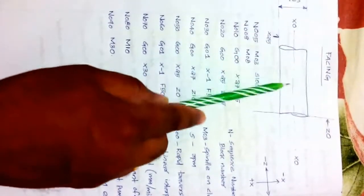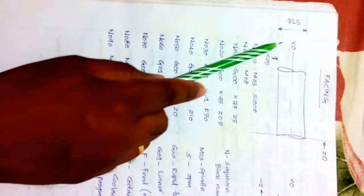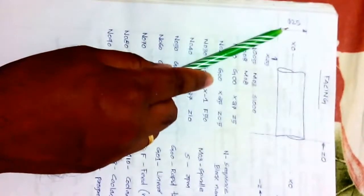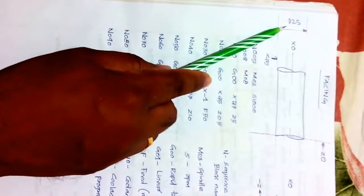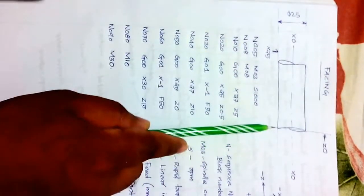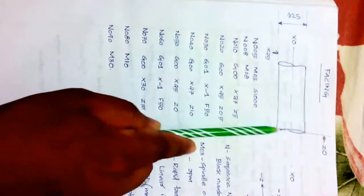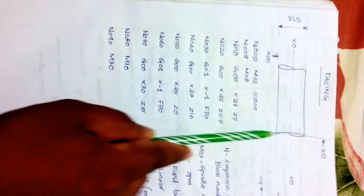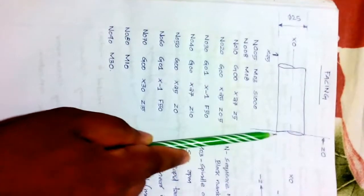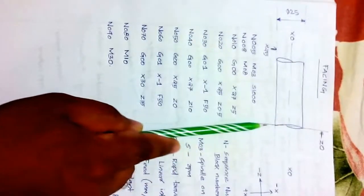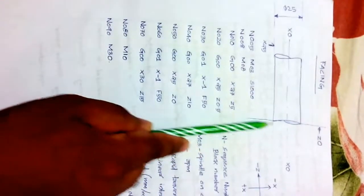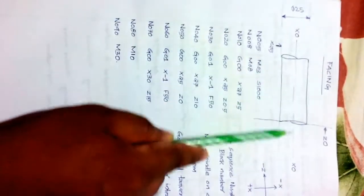We are looking at a facing operation. The diameter of the workpiece is 25 millimeters. I want to face this portion — finish this surface of the workpiece. This is my facing area.